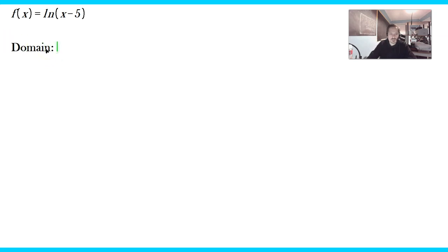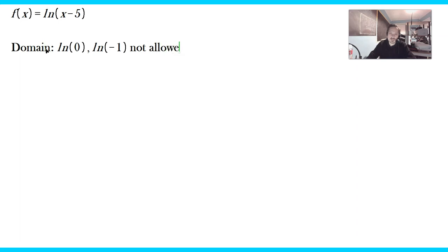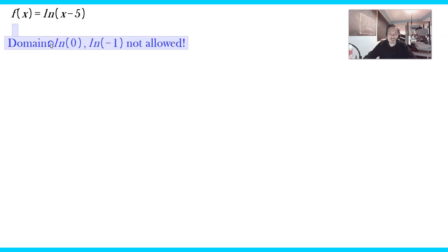So first, the domain. How do you find the domain? Well, things like ln of 0 are not allowed, and ln of a negative number is not allowed. So we have to account for this because the ln function is not defined at 0 or negative values.